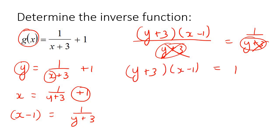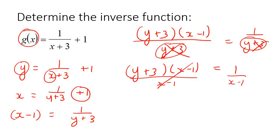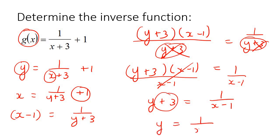Here's my advice: don't multiply these two brackets together — you're trying to get the y by itself. Just divide this on both sides, and here it will cancel. You end up with y plus 3 by itself. Next step, take this 3 over, and that's the answer. But now replace this y with g, and put a negative 1 to show that it is the inverse.